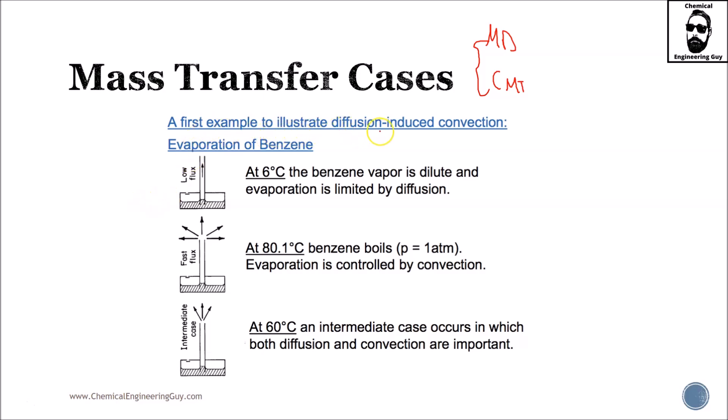A first example to illustrate diffusion-induced convection: evaporation of benzene, which you probably have been working with in the exercise before. Let me show you here. We got benzene here and I think this could be an atmosphere of air. Here we have a low flux, let it be a natural evaporation of benzene.